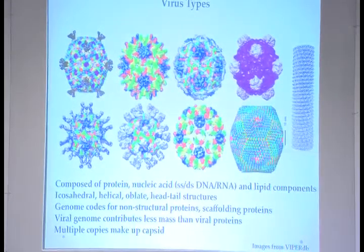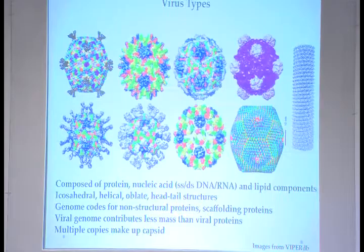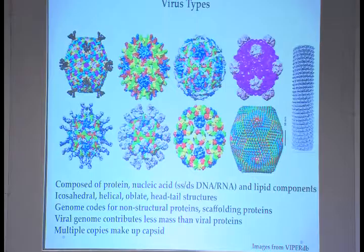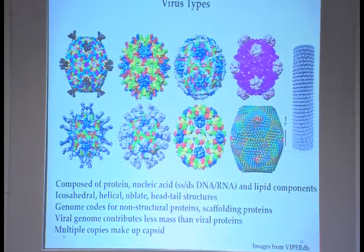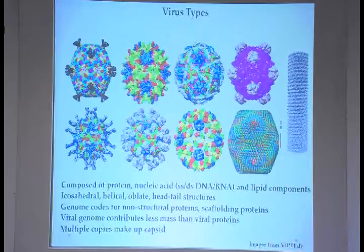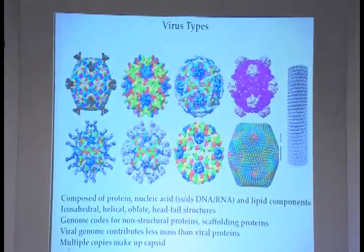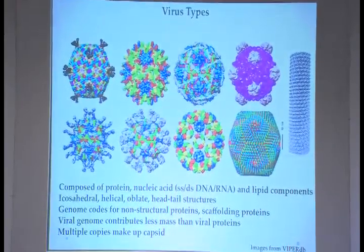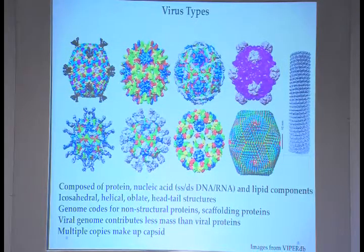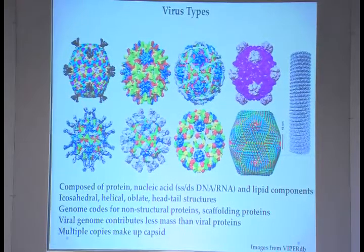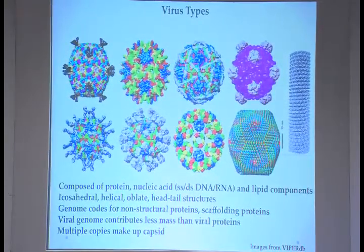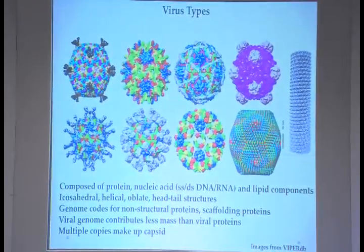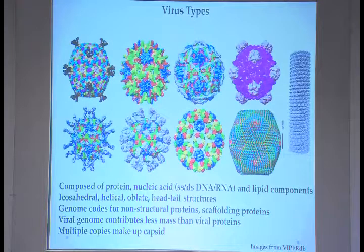Scaffolding proteins may or may not be part of the final capsid, but they help the capsid proteins come together to form a structure. An early observation was that the viral genome contributes less mass than viral proteins, leading to the idea that the viral capsid is made up of multiple copies of structural proteins.